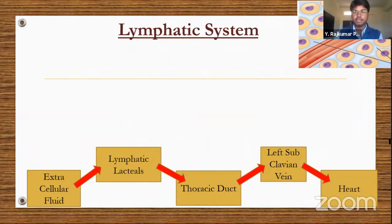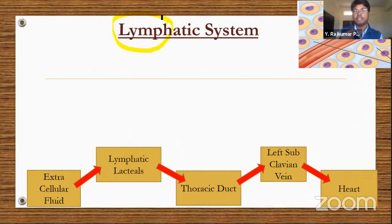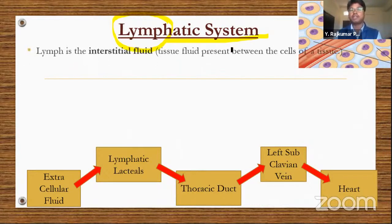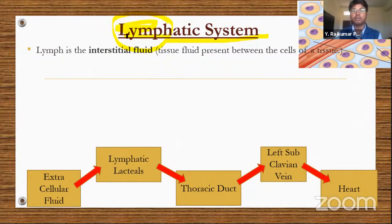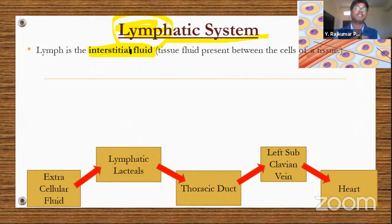Now let's learn about the lymphatic system. It is a network of tubular structures made by lymphatic vessels, hence called the lymphatic system. Lymph is also a body fluid — specifically it is the interstitial fluid, the fluid present between the cells of the body.